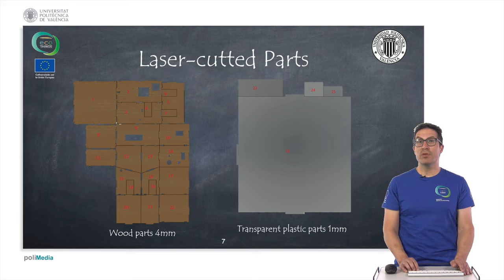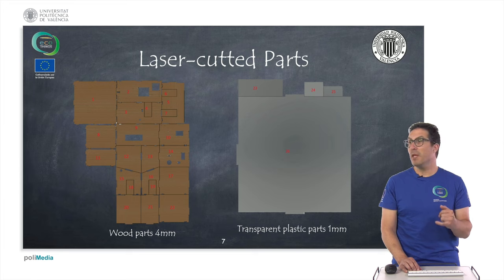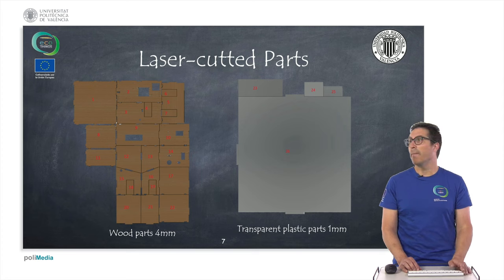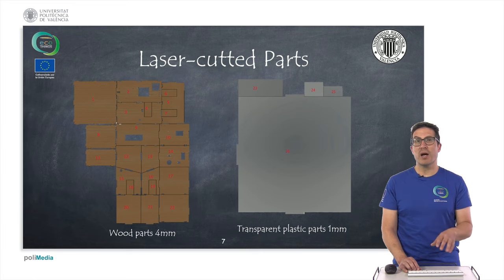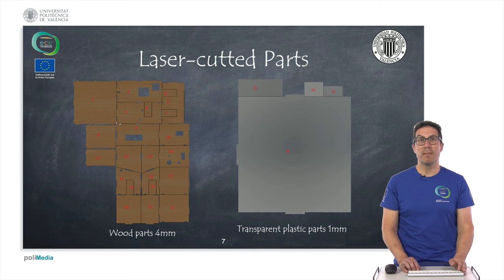There is also an alternative if you want to manufacture this house using laser-cut parts. In that case, you need to use 4 mm wood. If you don't have a laser cutter, you can outsource these parts using the provided drawings. Some parts are made from wood, and others are made from 1 mm transparent plastic, which is used for the ceiling and the windows. That's basically all the parts needed.